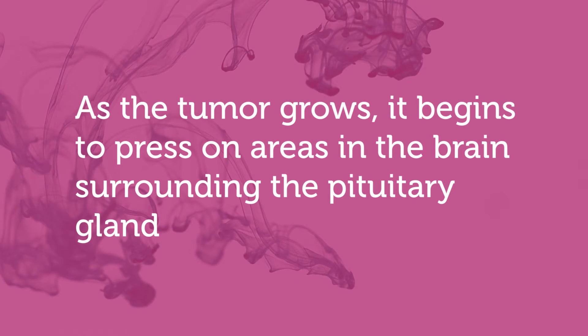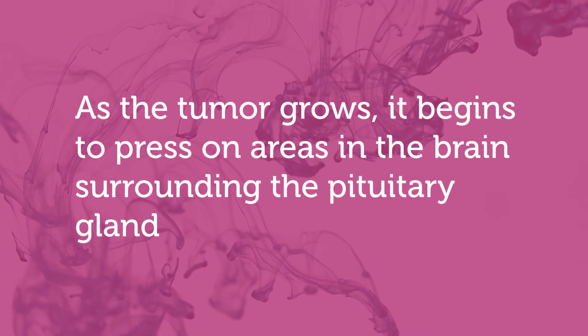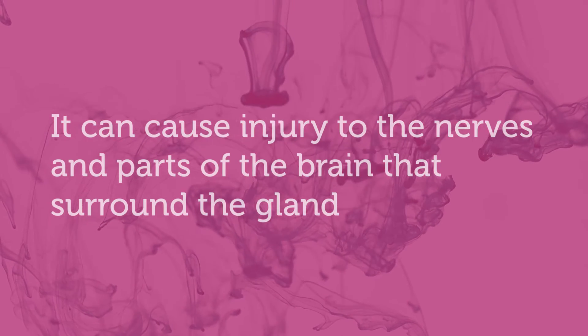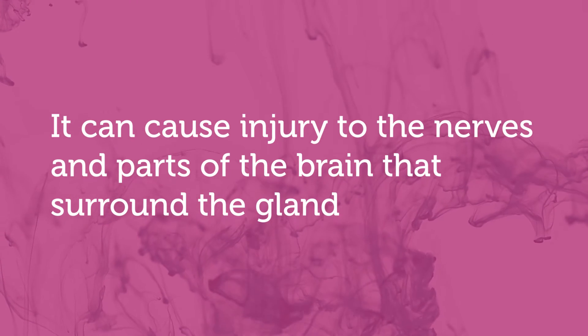As the tumor grows, it begins to press on areas in the brain surrounding the pituitary gland, causing dysfunction of the gland itself and injury to the nerves and parts of the brain that surround it. Most commonly, these symptoms include difficulty with vision — whether from pressure on the optic nerves that run directly above the gland, or issues with the cranial nerves that control eye movement, causing double vision and other problems.